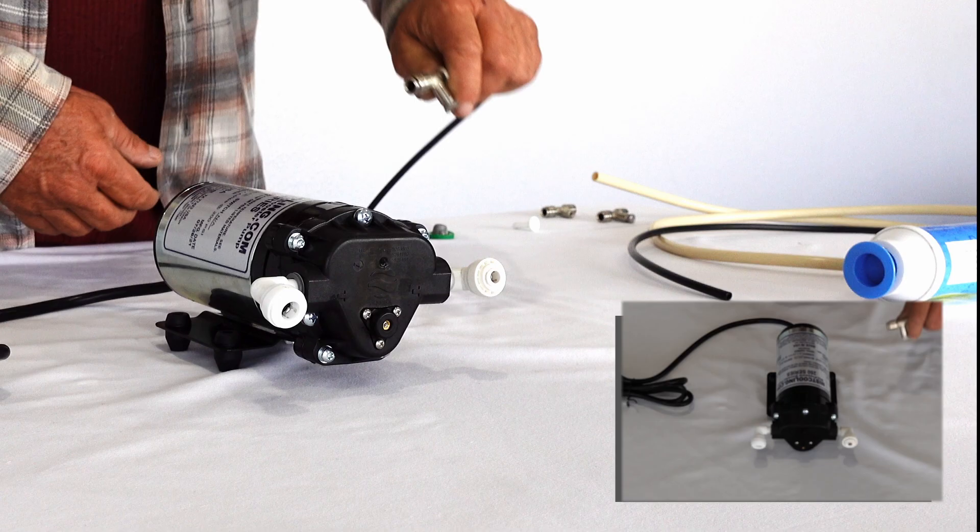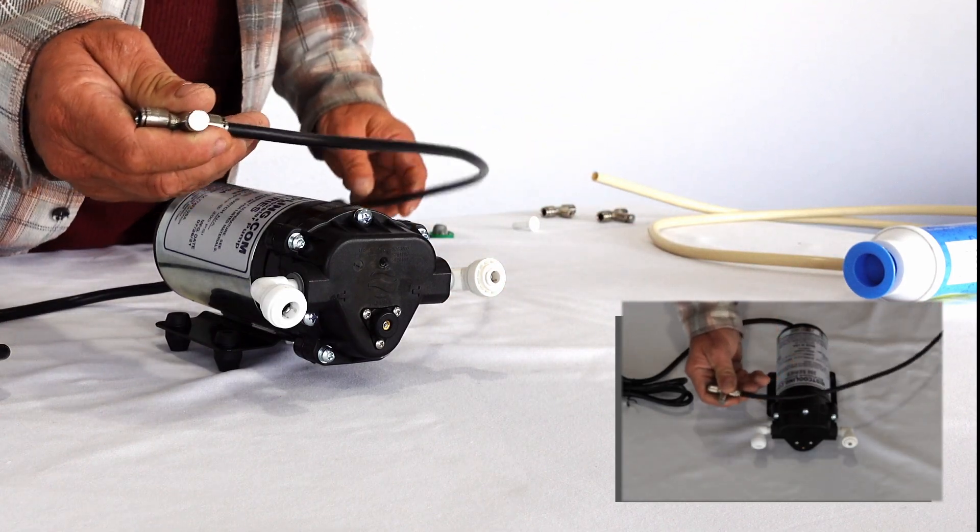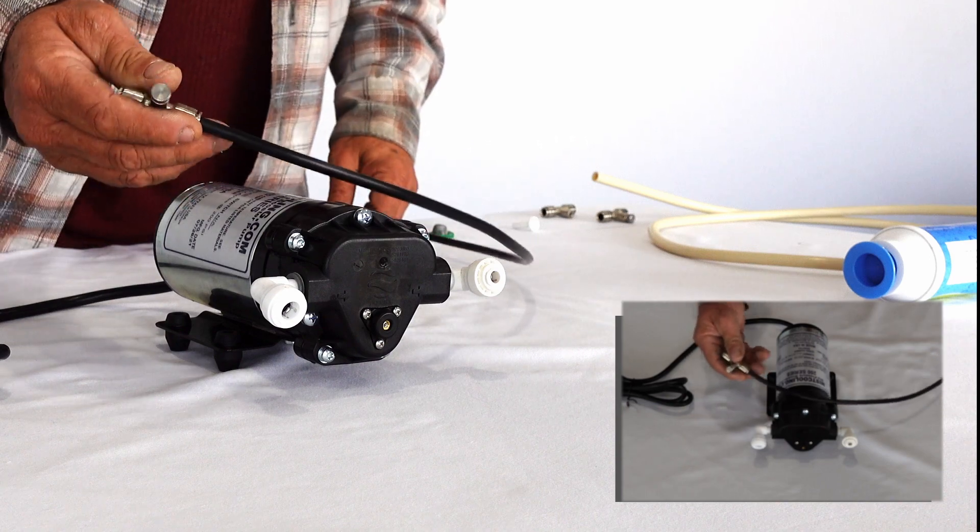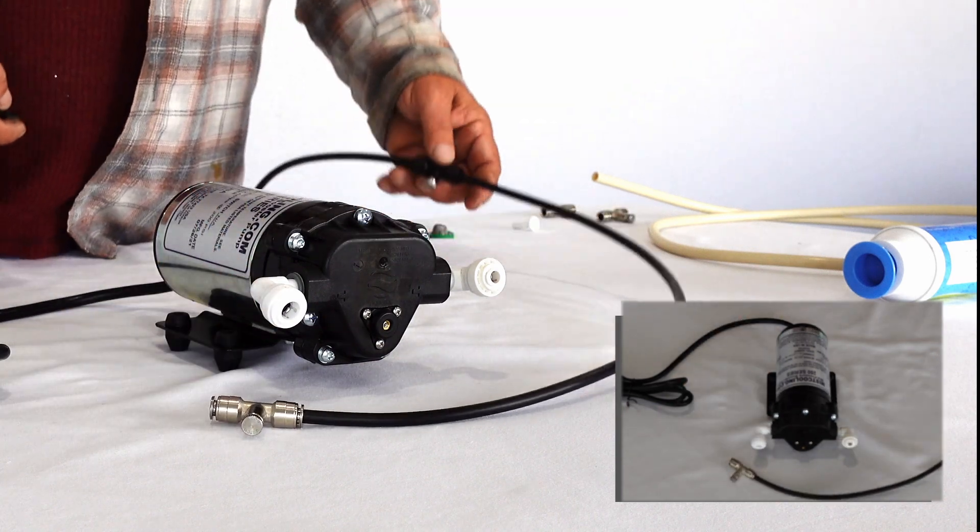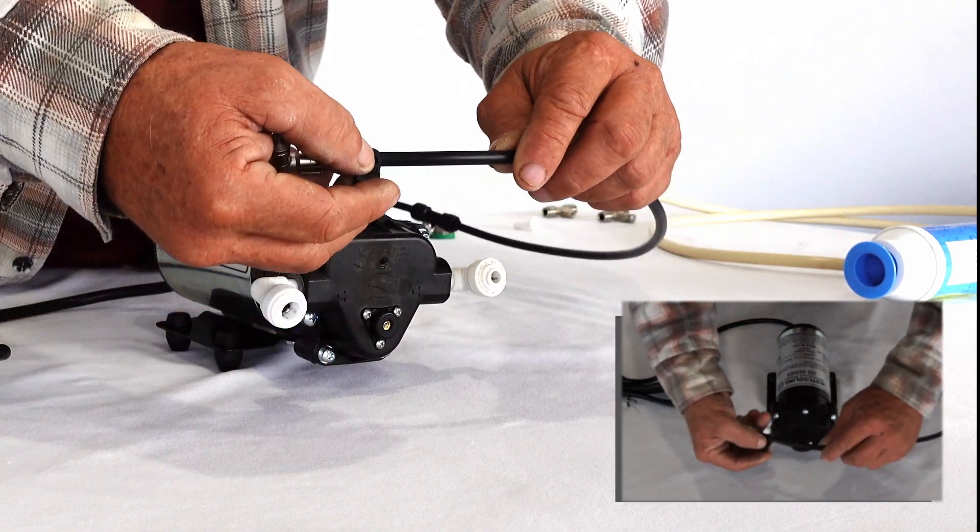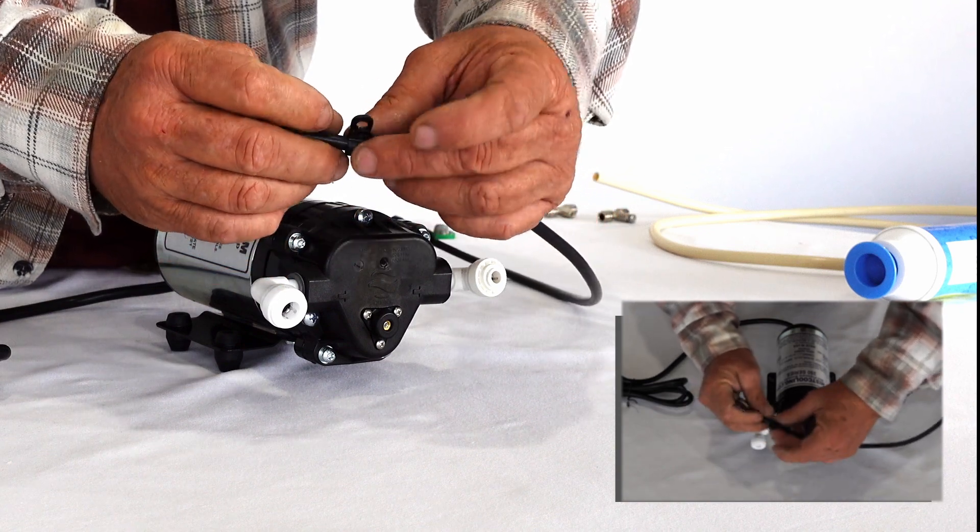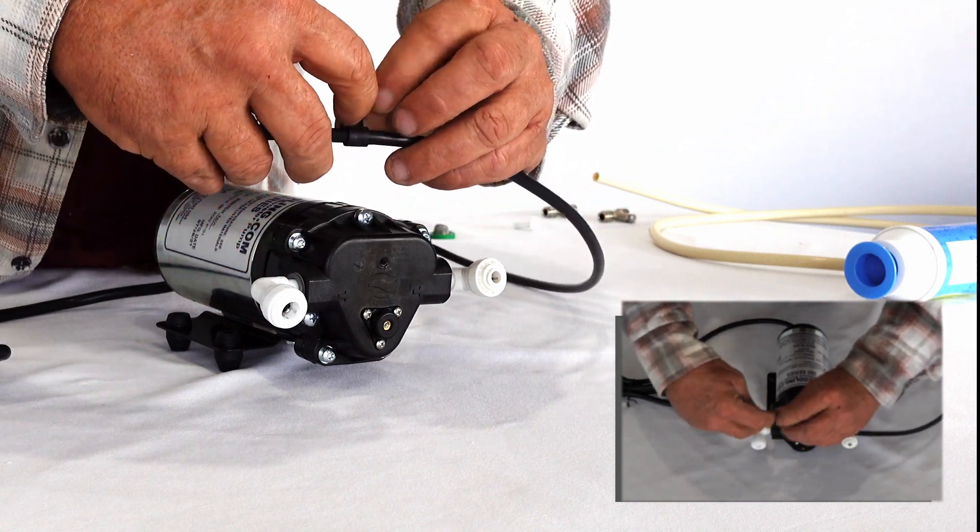Then after you install your line to your house by using these clamps. These clamps just simply click onto the line there. Then you run your screw through here.